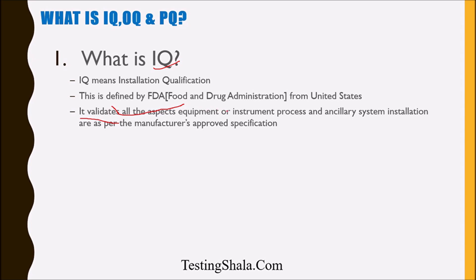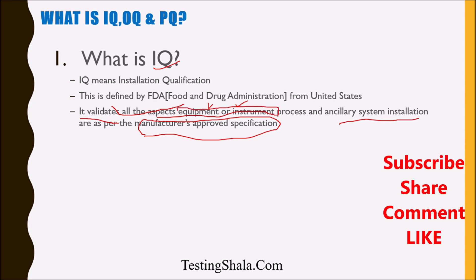The main thing we are going to validate in Installation Qualification is to ensure that whatever instrument, equipment, or software we are going to install is as per the manufacturer's approved specification. The manufacturer's approved specification is approved by the FDA, and the FDA ensures that this kind of Installation Qualification has to be done to verify that it meets FDA standards.